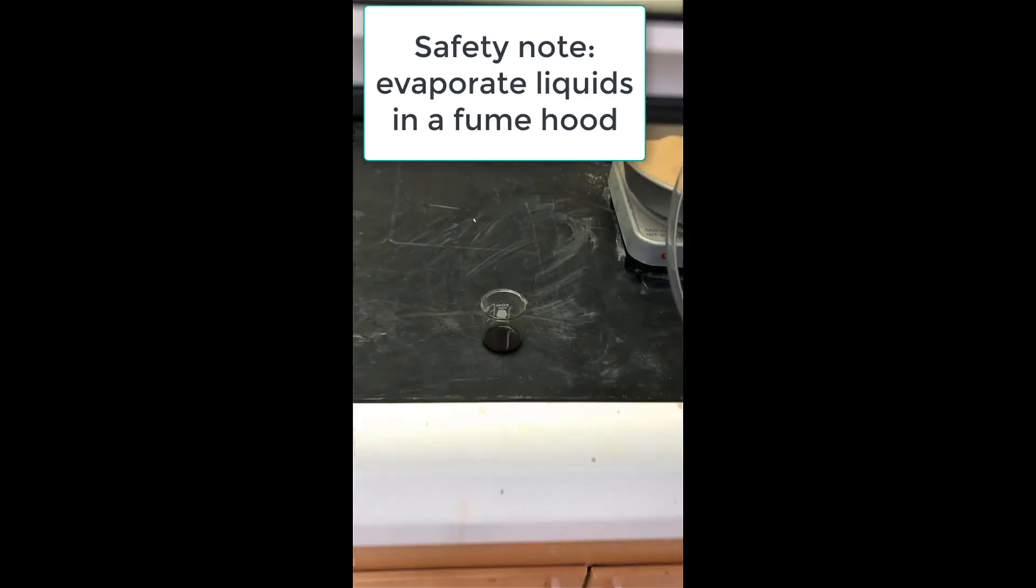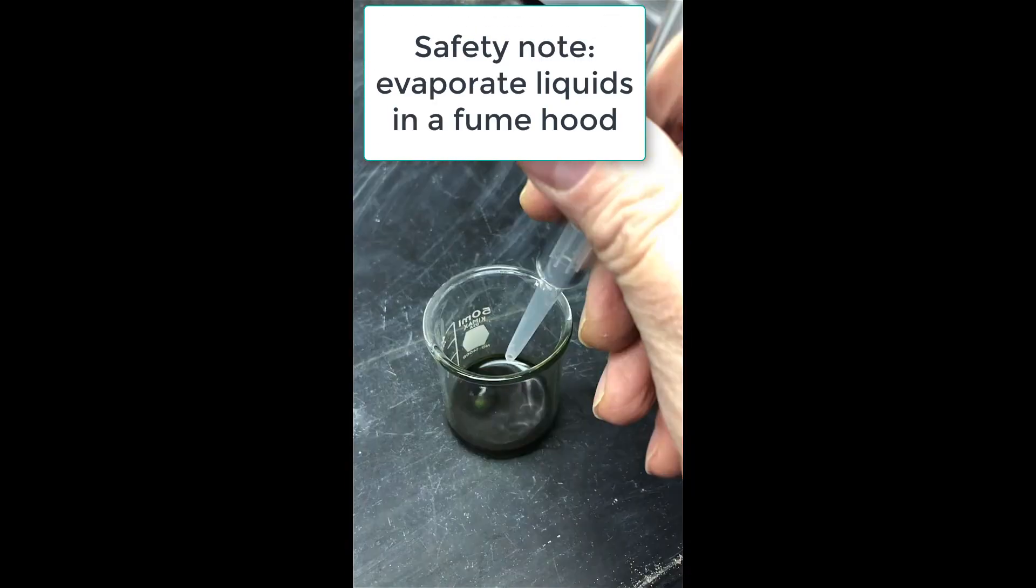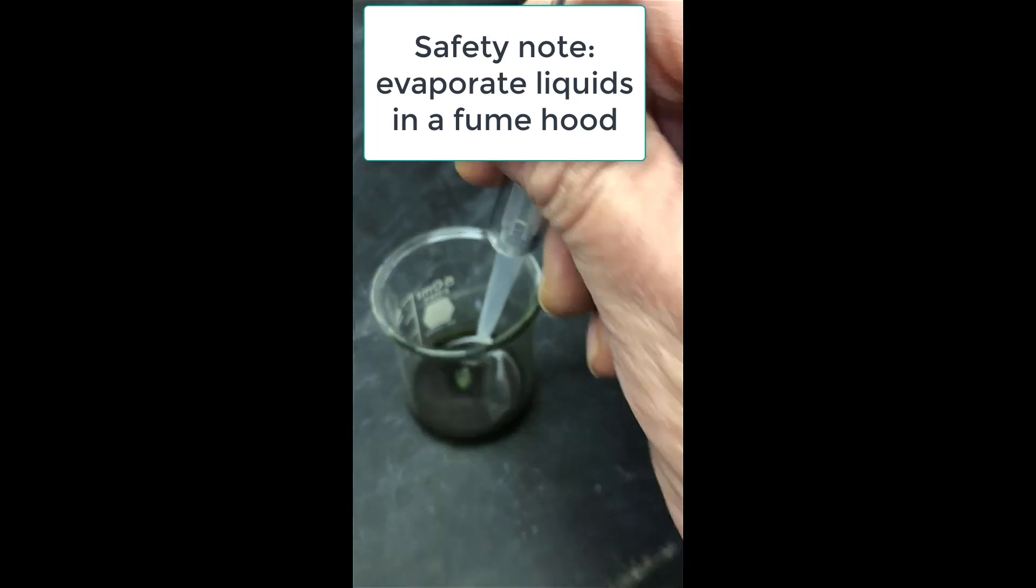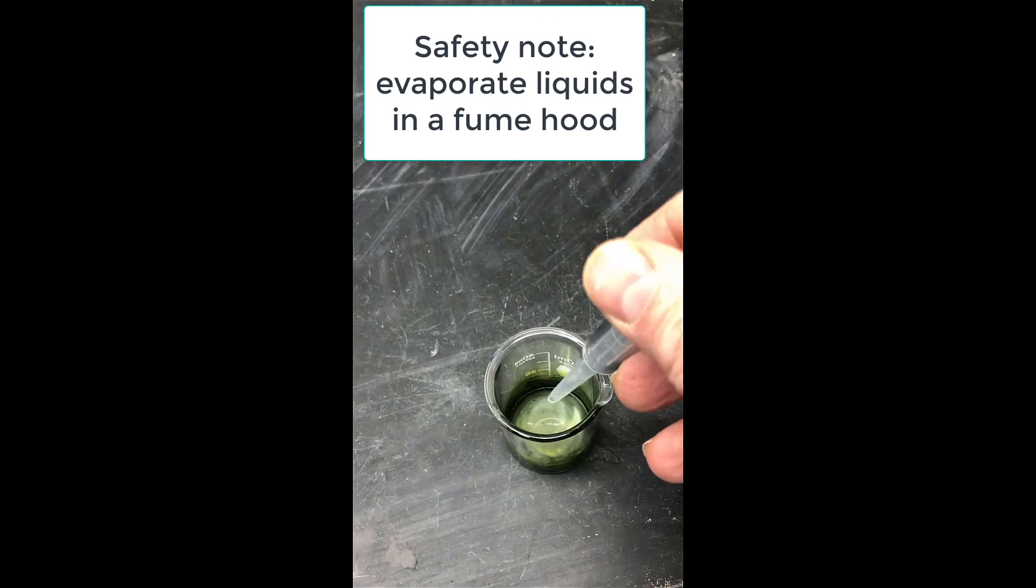Now we need to remove solvent, so we're going to do that in a fume hood. Use a gentle stream of compressed air to blow into the flask to remove the solvent until it is completely gone and you have a green residue.